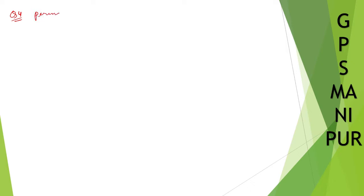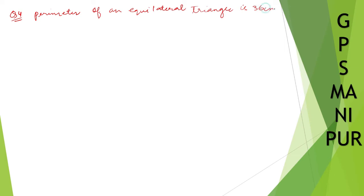We are doing question number four, exercise two point one. The question is: the perimeter of an equilateral triangle is 36 centimeters. Find its area using Heron's formula.